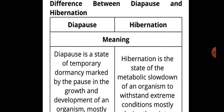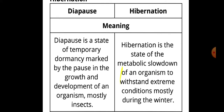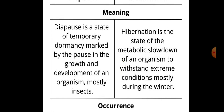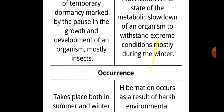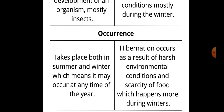Difference between diapause and hibernation: Diapause is a state of temporary dormancy marked by the pause in growth and development of an organism, mostly insects. Hibernation is the state of metabolic slowdown of an organism to withstand extreme conditions, mostly during winter. Regarding occurrence, diapause takes place both in summer and winter — it may occur at any time of the year — whereas hibernation occurs as a result of harsh environmental conditions and scarcity of food, which happens more during winters.